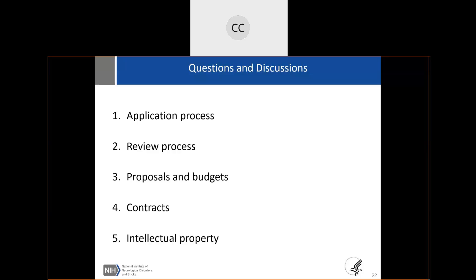Regarding budgets and contracted projects: anything that NIH is contracting, you do not budget in your application. It's really important that you clearly delineate what you're going to do, because many people coming into this program are not necessarily familiar with the drug discovery process from soup to nuts — that's why they're coming to the program. Anything BPN is doing through NIH contracts, you are not putting in your budget; you just budget for what you need.